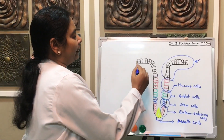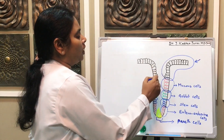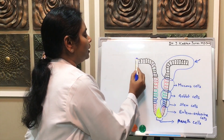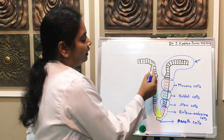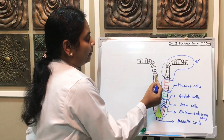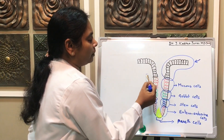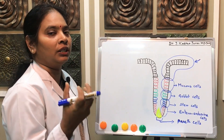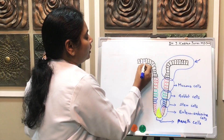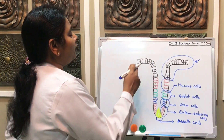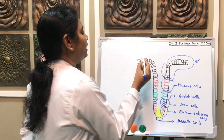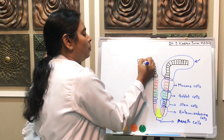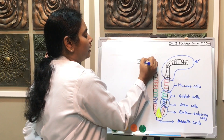This is one of the crypts of Lieberkühn present in the small intestine, which is lined by epithelial cells. At the surface, this is the simple columnar epithelium. In the upper portion of the area, these cells are simple columnar epithelial cells which show microvilli formation on the surface to increase the surface area for absorption. These cells are also secreting mucus, and in between the epithelial cells, we will see one typical characteristic cell - goblet cells, or flask-shaped cells.